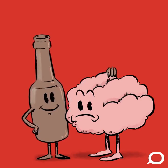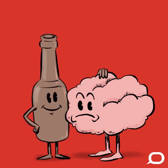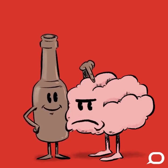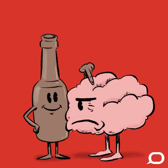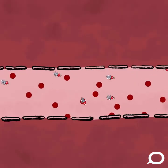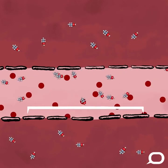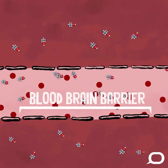Ethanol acts as a depressant within the brain, meaning that it slows down the function of nerve cells. It does this by messing with the brain's neurotransmitters, which it can do because ethanol is such a small molecule that it can pass through the tight capillaries in the brain known as the blood-brain barrier.